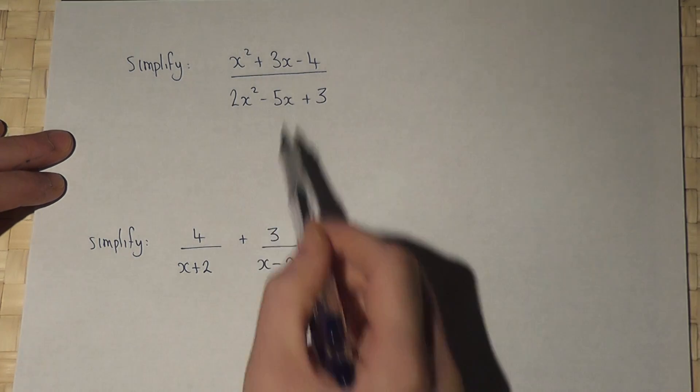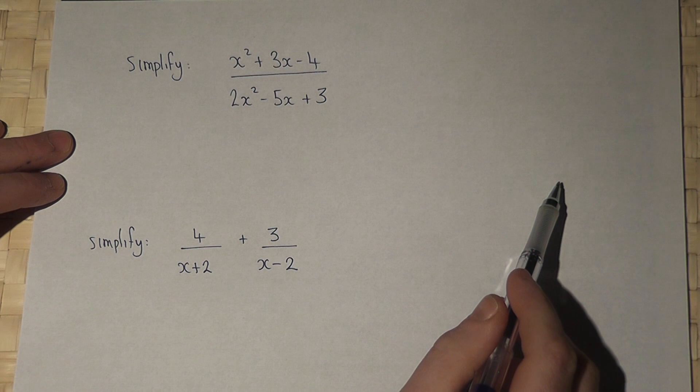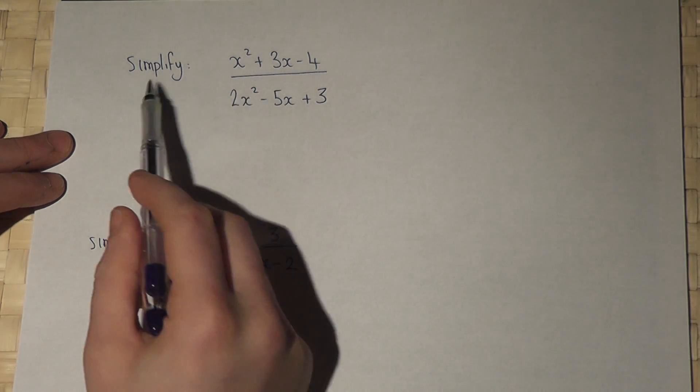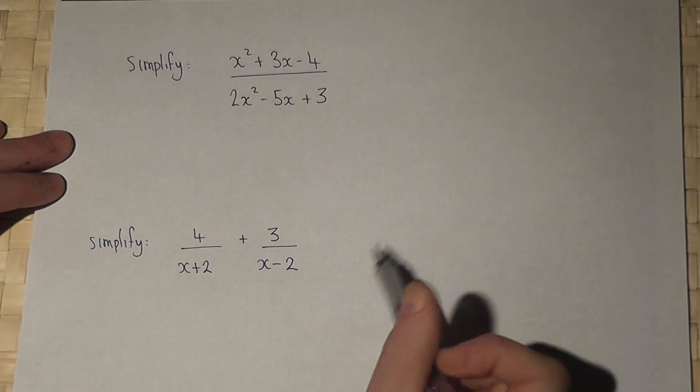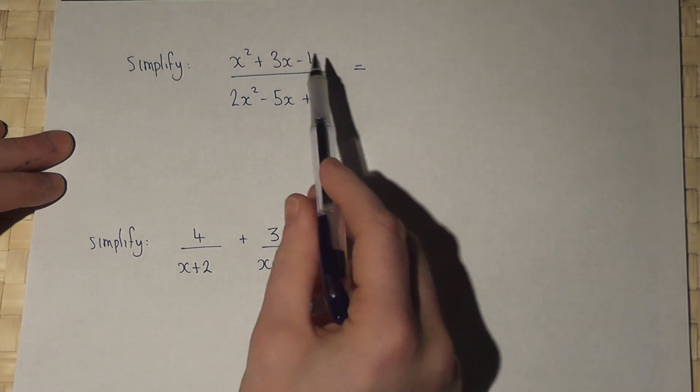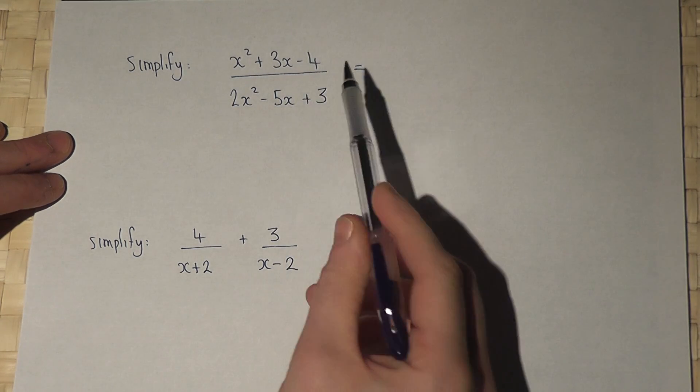This problem looks at two examples of algebraic fractions. In the first one we're asked to simplify one fraction. The method here is to factorize the top and the bottom separately.